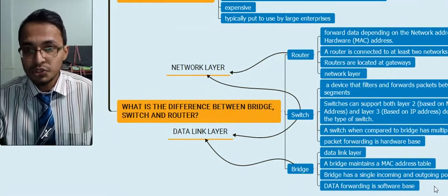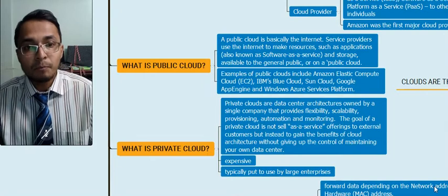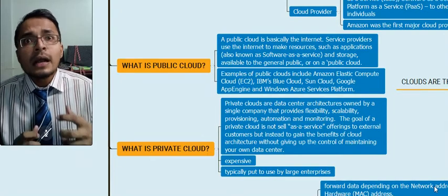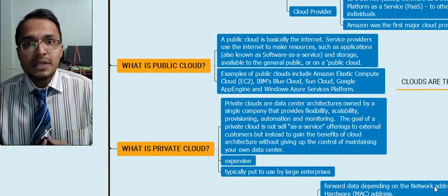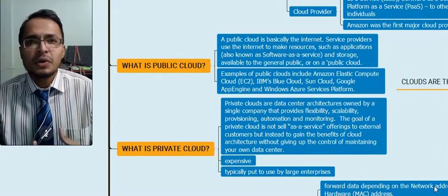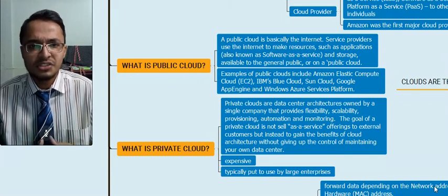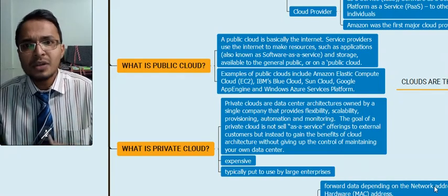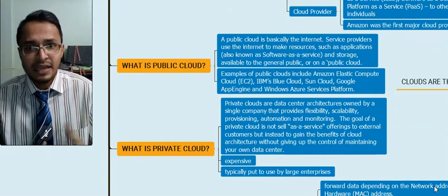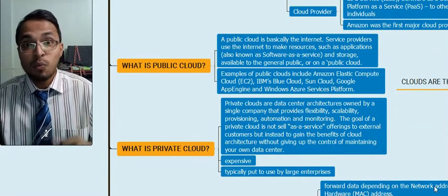Moving to our next question: what is the public cloud and what is the private cloud? Clouds are remote servers located anywhere in the world in which you can store your data, maintain it, and make all the changes you want. Public clouds are basically the internet — examples of public clouds are IBM, Amazon, and Google.